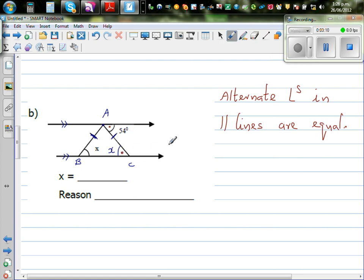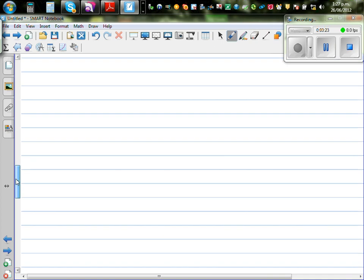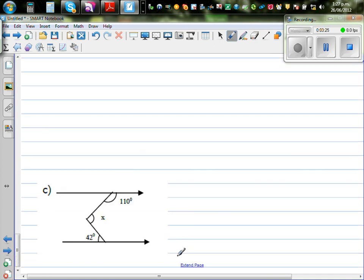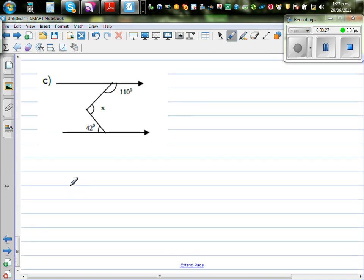So we can say X is equal to 54. The reason is because X and this angle form alternate angles. Let's look at one more question. This is X, this is 42, and this is 110. So what can we do?